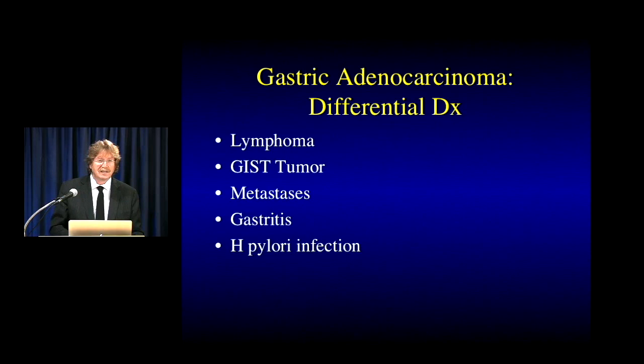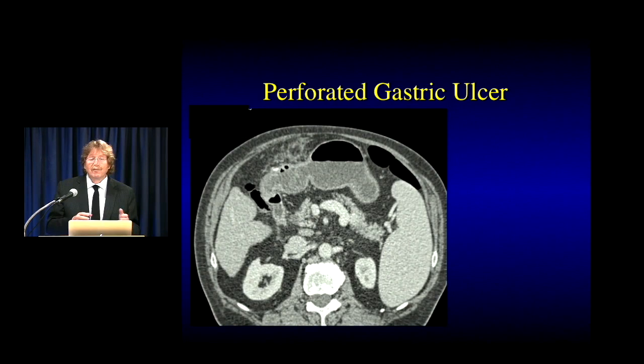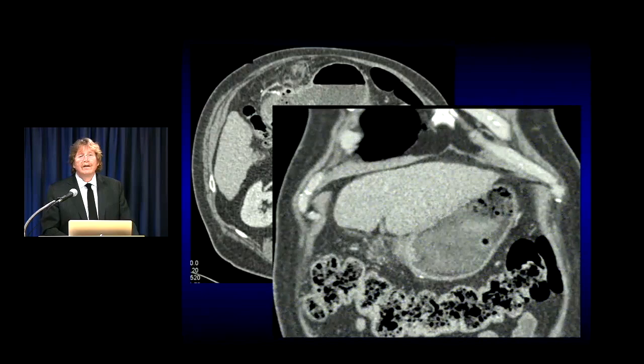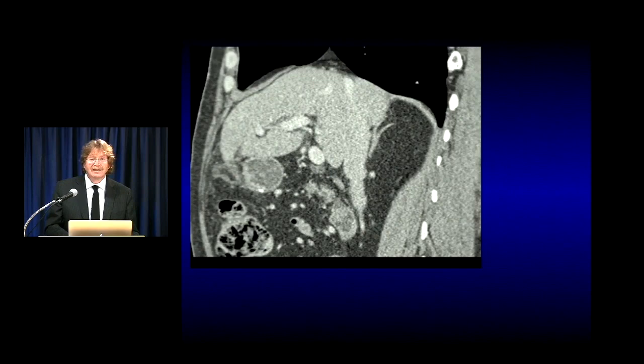For example, a perforated benign gastric ulcer produces stranding around the stomach, which always raises concern about carcinomatosis. Also, if you have a gastric cancer that's perforated, you may tend to overcall the extent of disease — thinking it has spread into the omentum or mesentery when it's simply the perforation. You need to be very careful: when you have perforation, you can overcall the extent of disease. One case was a perforation due to gastric cancer, but there was no carcinomatosis — it was simply secondary to the inflammation.